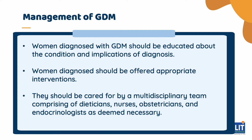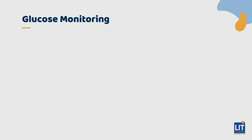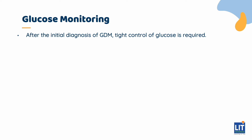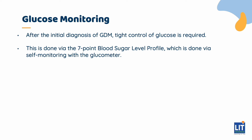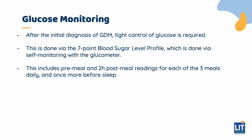Women diagnosed with GDM should be educated about the condition and implications of diagnosis and offered appropriate interventions. The women should be cared for by a multidisciplinary team of dietitians, nurses, obstetricians, and endocrinologists as deemed necessary. After the initial diagnosis of GDM, tight control of glucose is required. This is done via the 7-point blood sugar level profile, which is done via self-monitoring with the glucometer. This includes pre-meal and 2-hours post-meal readings for each of the 3 meals daily, and once more before sleep.